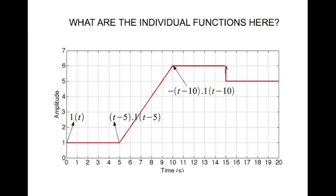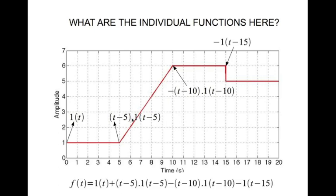And at t equal to 15 there is a sudden drop. Now this looks like a negative unit step, and that's what it is. So the function, this whole function, can be represented as a sum of all these functions.